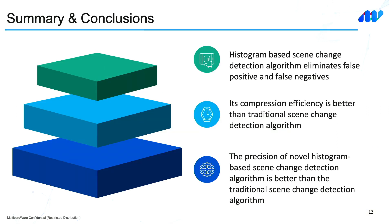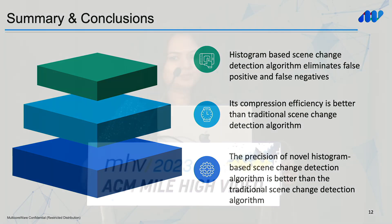To conclude, our histogram-based detection algorithm eliminates both false positives and false negatives, and overall provides better compression efficiency compared to the traditional scene change algorithm in X265. The precision and accuracy of the algorithm is also better compared to the existing algorithm. Thank you.